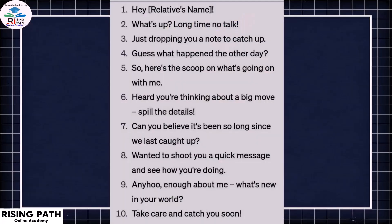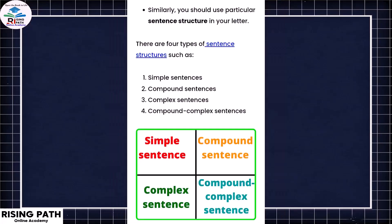On this slide you can see some phrases you can use in your informal letter — for example, 'Hey, what's up?' and 'Just dropping you a note.' Items one to ten are informal phrases suitable for a letter to your relative. Before you begin, make sure your letter uses the appropriate tone and register.